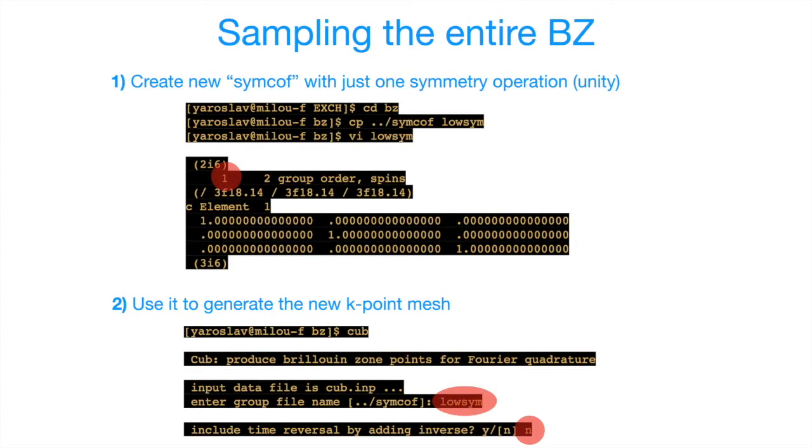So in practice, we do it in the following way. We have to create a new SIM call file containing only one symmetry operation, which is just identity. And we have to generate the k point mesh with the KUB program using this new SIM call file, which I name lowSIM in this case. So this way, the k point mesh will be generated without applying any symmetry operations.